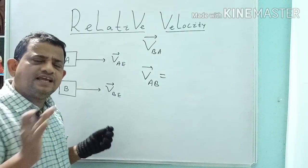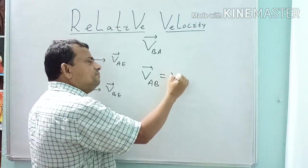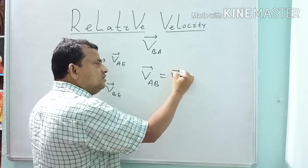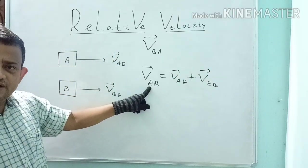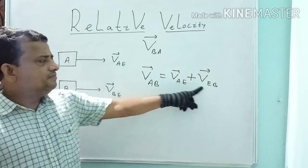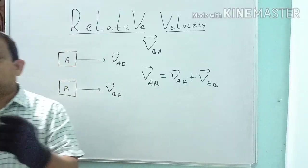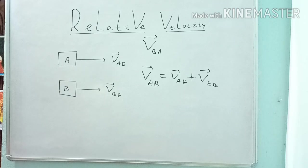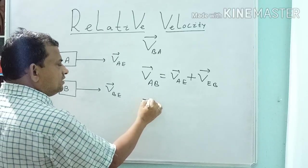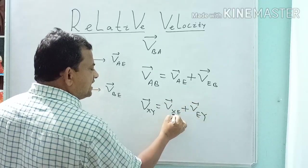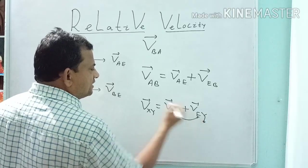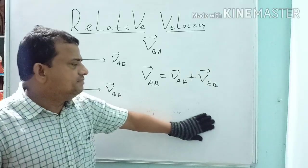How to calculate? The process is like this: VAB can be written as VAE plus VEB. A is the starting point, B is the ending point, and E is in the middle. So VAB = VAE + VEB. Similarly, VXY can be written as VXE + VEY — starting, ending, and E is the middle part. In this way, your relative velocity can be calculated.